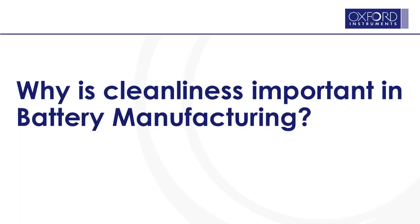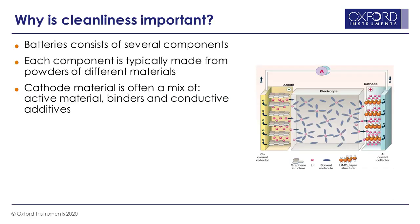Why is cleanliness important in battery manufacturing? Batteries consist of several components, such as anodes, cathodes, separators, current collectors, and electrolytes. Each component is typically made up from powders of different materials that have been mixed and processed to form the anode or cathode itself. This means that there are many different powders involved, and thereby it's very easy to get unwanted particles into the mixture.